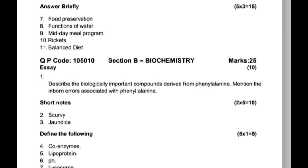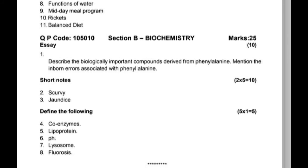Section B: Biochemistry, 25 marks. First question: Describe the biologically important compounds derived from proline, and methods associated with it. Inborn errors associated with proline metabolism. This is a 10-mark question.